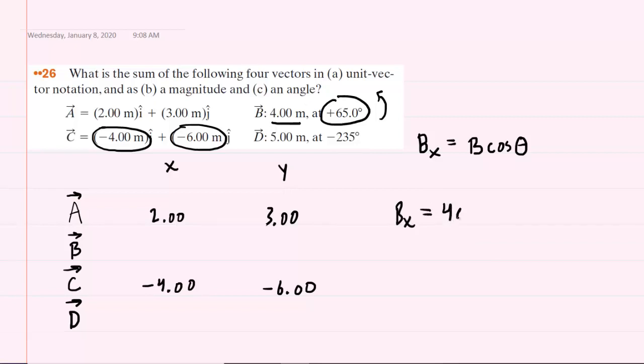We'll take the magnitude of four meters, multiply it by the cosine of 65. When you do this, make sure that your calculator is set to degree mode, of course. And four multiplied by cosine 65 is about 1.69. So we're going to be able to fill in that value, 1.69, for the X component of vector B.